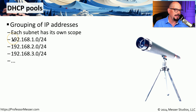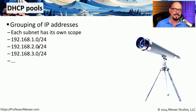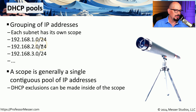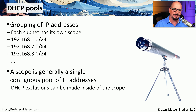These pools will usually be large groups of IP addresses. For example, you might have 192.168.1.0/24, 2.0/24, 3.0/24, and so on. If anyone connects to the network from any of those subnets, the DHCP server will pull from the appropriate pool and provide that available IP address to the end device. Although this is often a single large contiguous pool of IP addresses, it doesn't have to be. You could configure different sections with exclusions in the middle of the pool, so certain addresses are always assigned to a particular device while all other addresses remain available as dynamic addresses for any other device on the network.